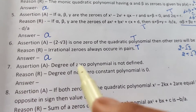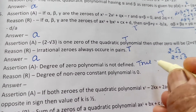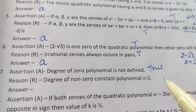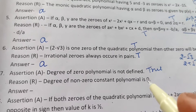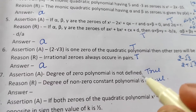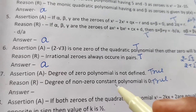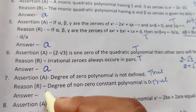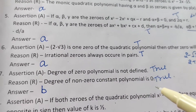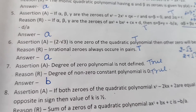Question 7: Assertion — the degree of the zero polynomial is not defined. This is clearly true. Reason — the degree of a non-zero constant polynomial is 0. This is also true, but it is not a valid reason for why the zero polynomial's degree is undefined. Since both are true but reason is not the correct explanation, the answer is option B.